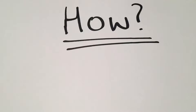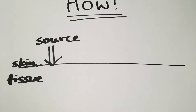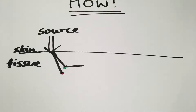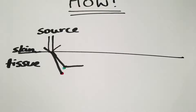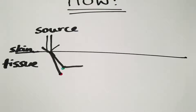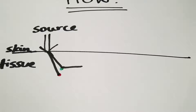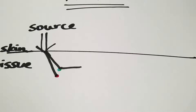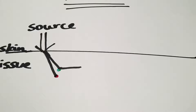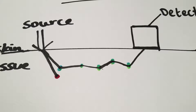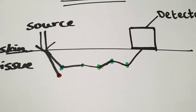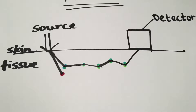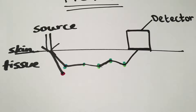How does DOI do this? Well, first a source of infrared light is placed on the skin. The light then passes through the skin and interacts with the tissue beneath — meaning the light gets reflected or absorbed by parts of the tissue. After getting scattered by the tissue, any infrared light that hasn't been absorbed is detected by a detector that sits on the skin, allowing an image of the tissue to be created by mapping out the scattering of the light.